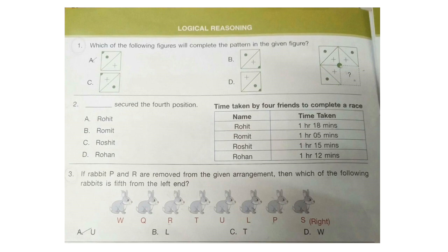Question 3. If rabbit P and R are removed from the given arrangement, then which of the following rabbits is third from the left end?